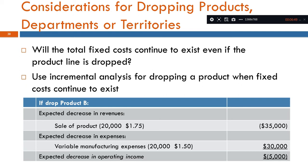Looking at the fixed cost element, if fixed costs continue and cannot be avoided, then fixed cost remains. The key question is whether fixed costs are avoidable upon dropping the product. If the contribution margin is positive, dropping the product may still not be the right decision, because fixed costs that continue to exist are irrelevant to the drop decision.